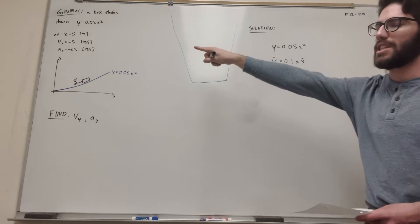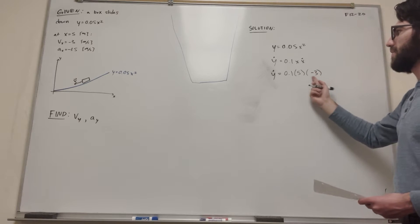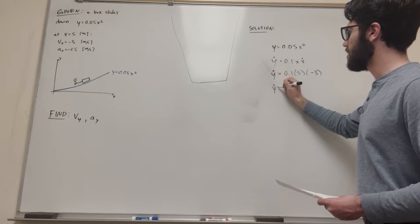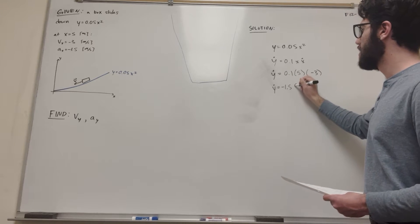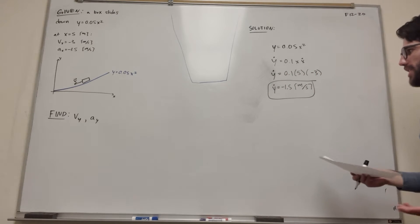And x dot, that's velocity in the x direction, so this is going to become negative 3. So now we have negative 15 times 0.1. So we're going to get that y dot is equal to negative 1.5 meters per second. And so that's our first answer.